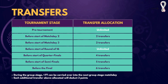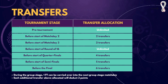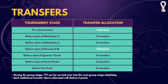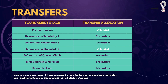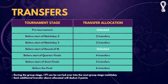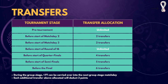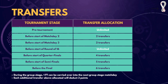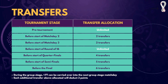Moving on to transfers — you'll be given a limited allocation of free transfers depending on the stage of the tournament. Pre-tournament, you get unlimited transfers. Before match day 2, it's 2 transfers; before match day 3, it's also 2 transfers. Before the round of 16, it's unlimited transfers again. Quarterfinals will be 4, semifinals will be 5, and before the final you'll be getting 6 free transfers.